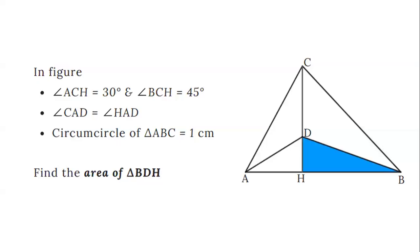Hello guys, in this video we are going to solve this problem. In this problem it is given that angle ACH is 30 degrees and angle BCH is 45 degrees.